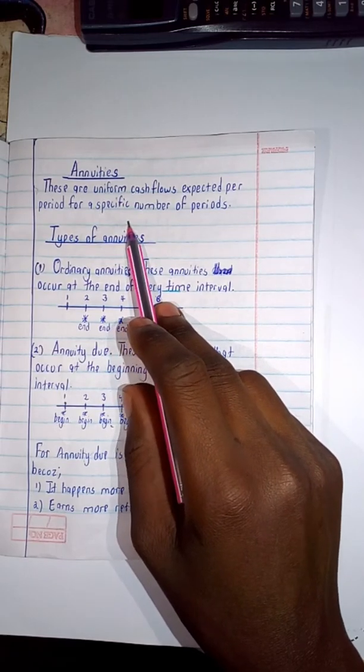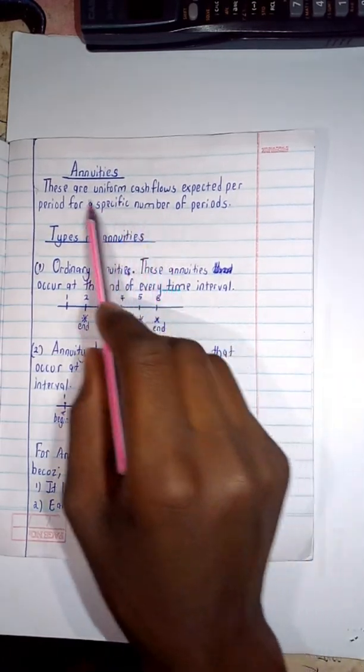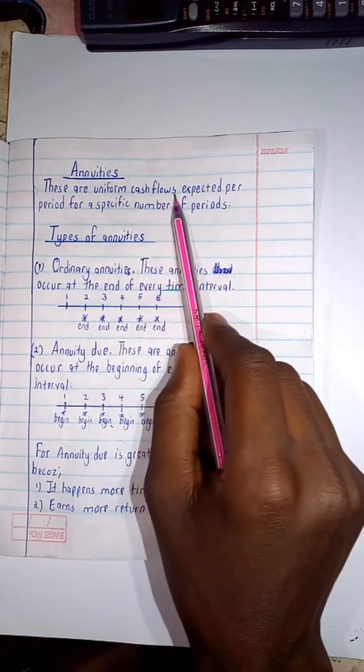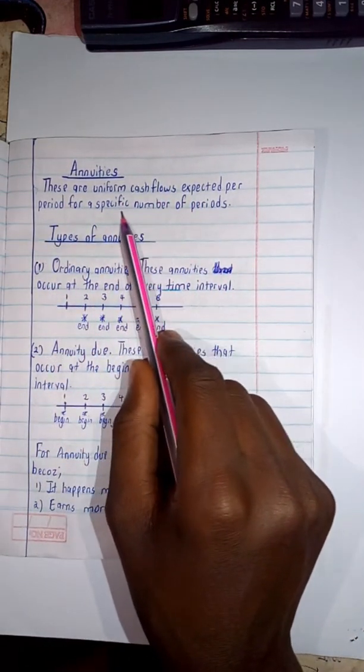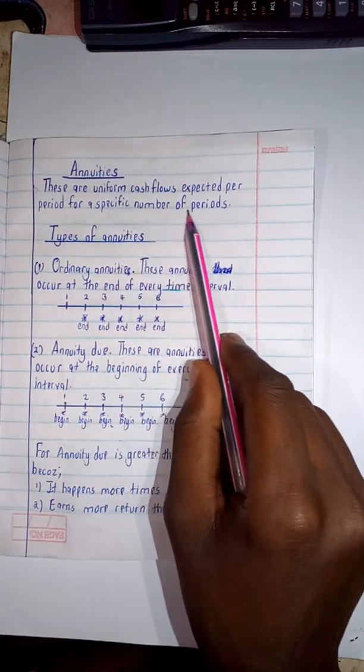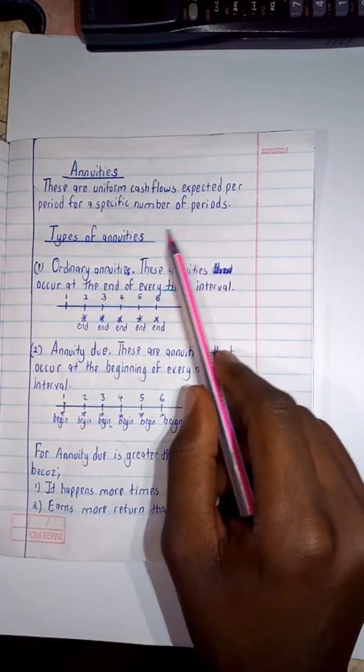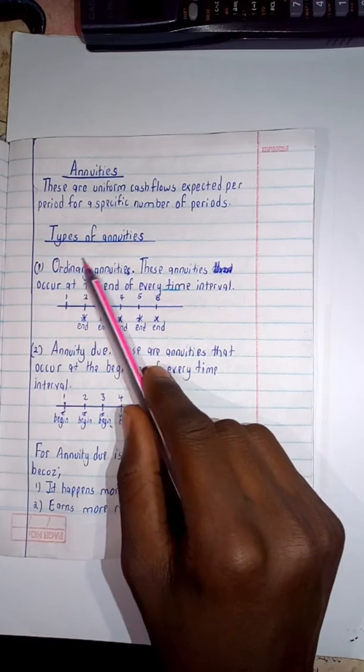Now with annuities, these are uniform cash flows expected per period for a specific number of periods. Now with this we get to have types of annuities.